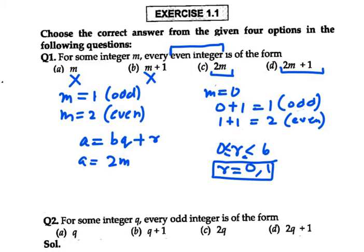Now putting the value r as 0. If we take r as 0, my a will be 2m. And if I put r equals 1, my a will be 2m plus 1.